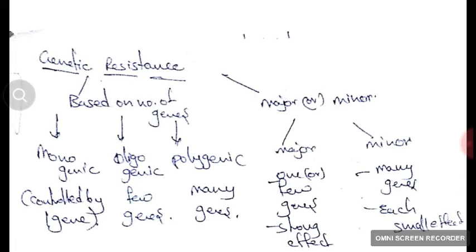Monogenic resistance is controlled by one gene. Oligogenic resistance is controlled by few genes. Polygenic resistance is controlled by many genes.